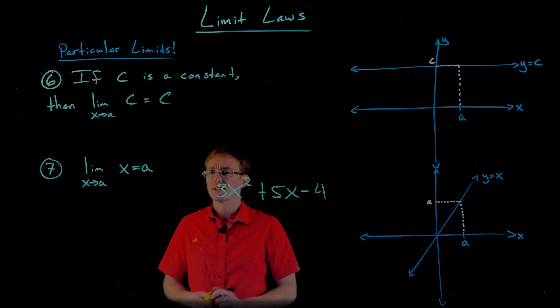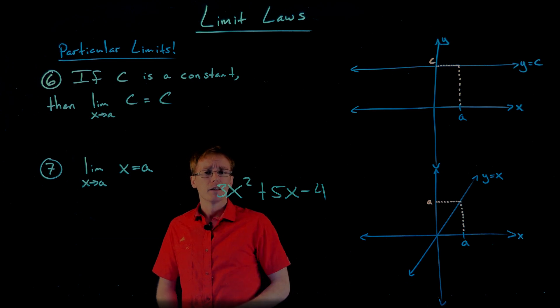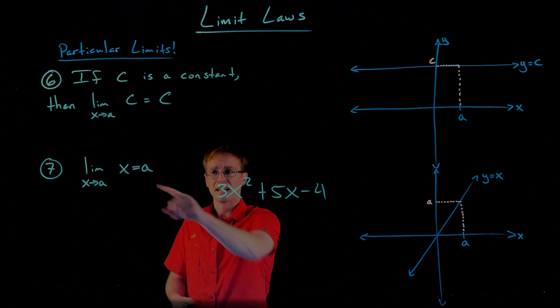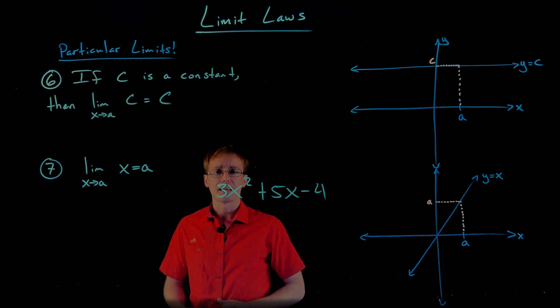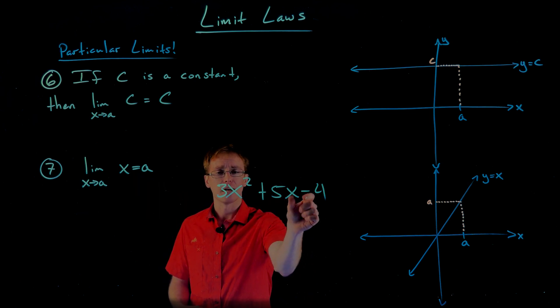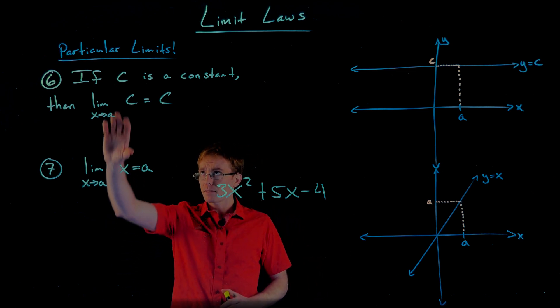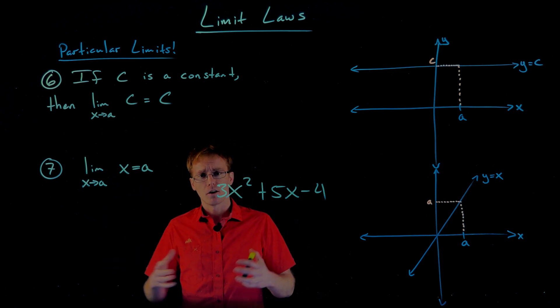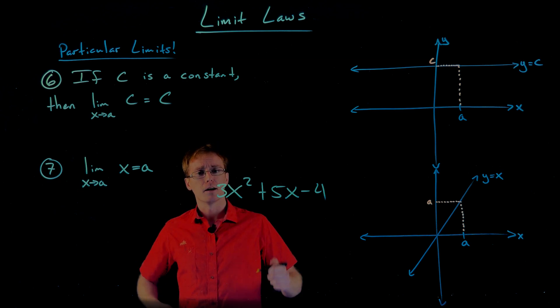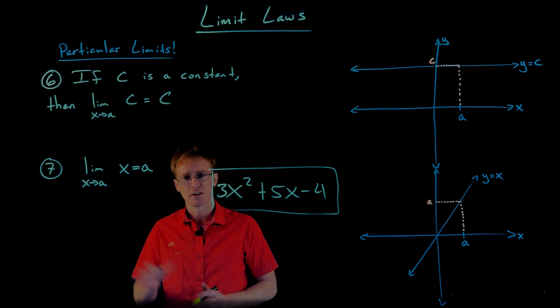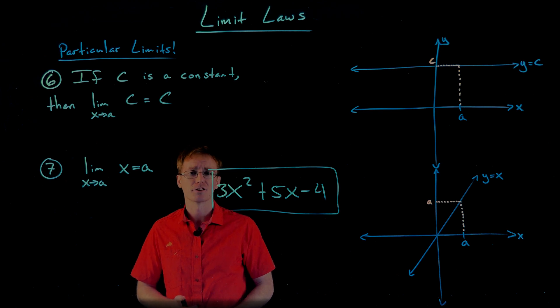well, we could break this down into the limit as x approaches a of 3 times the function x squared plus the limit as x approaches a of 5 times the function x minus the limit as x approaches a of a constant function like 4. So basically, using these particular limits, along with our first 5 limit laws, allows us to break down complicated functions like polynomials and rational functions and a good majority of our square root functions, and basically evaluate them using direct substitution.